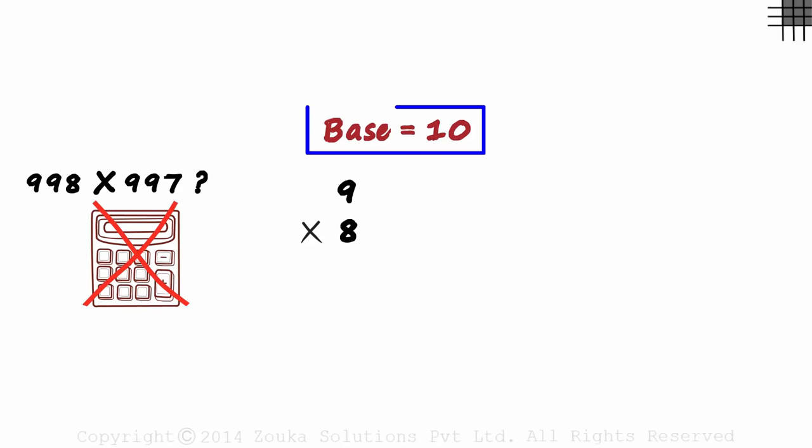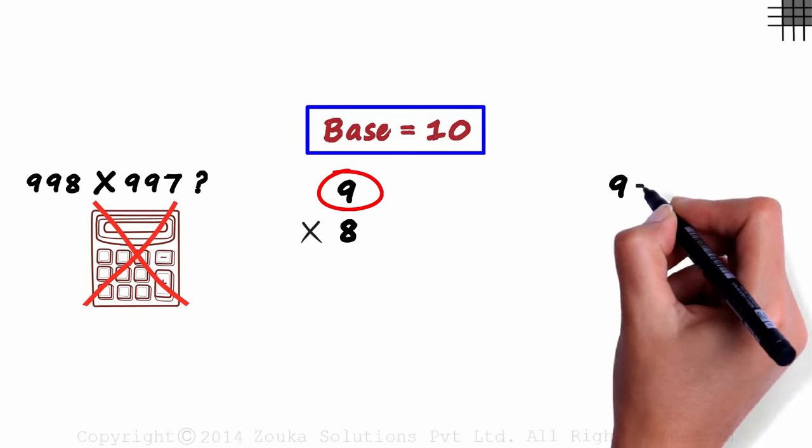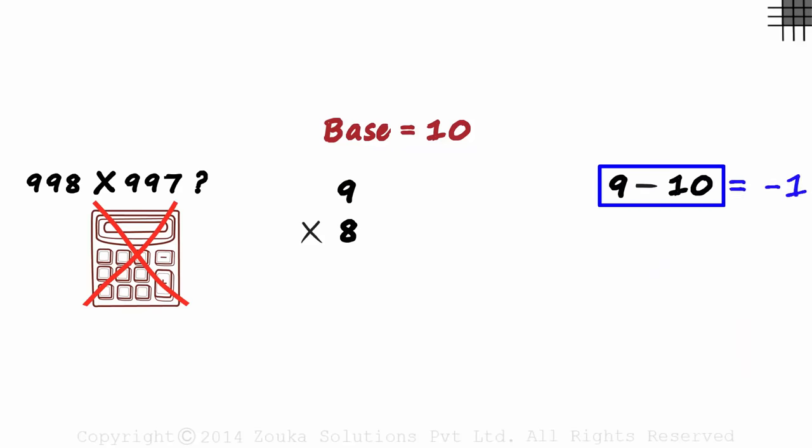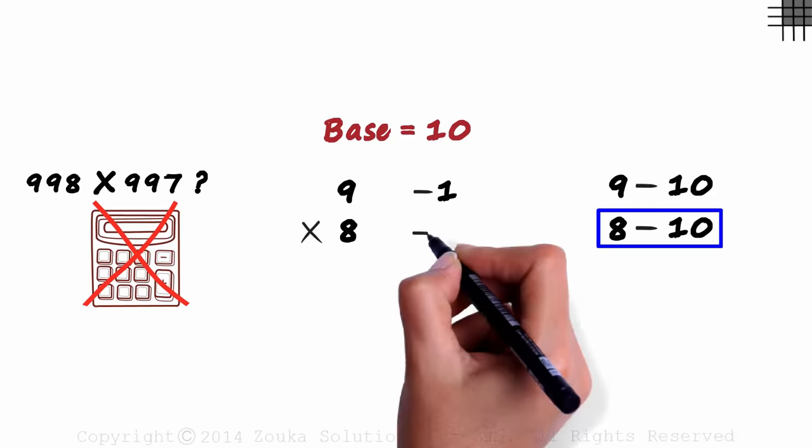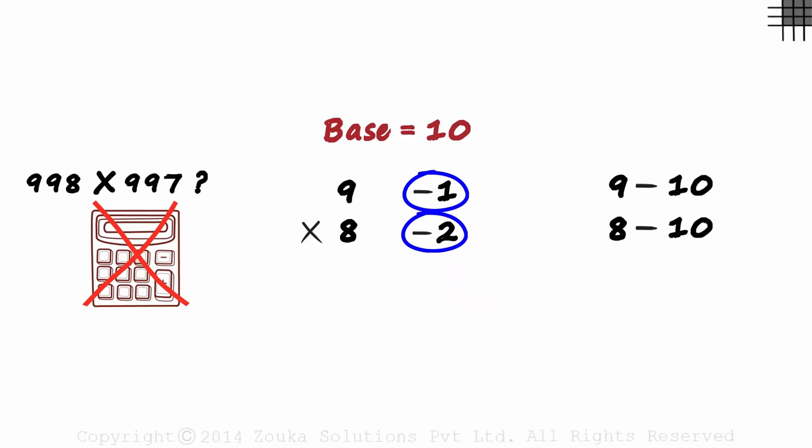First, we subtract the base from each of these numbers. Subtracting the base from the first number, we get 9 minus 10. That equals minus 1. We write it next to that number. Next would be 8 minus 10. That equals minus 2. These two numbers tell us how far these two numbers are from the base. 9 is minus 1 units away from the base. And 8 is minus 2 units away from the base. So the initial two steps, choose the base and subtract it from the numbers.